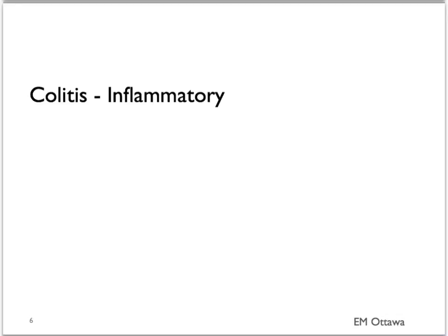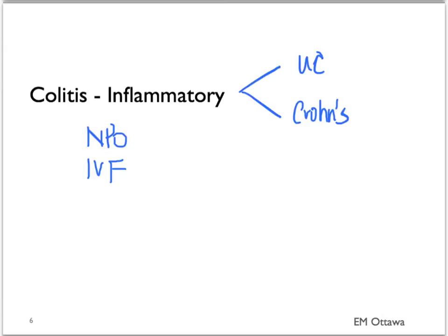For inflammatory colitis, that usually includes ulcerative colitis and Crohn's disease. The treatment for inflammatory colitis includes bowel rest, so the patient is kept NPO. IV fluids are given to ensure the patient is hydrated, and anti-inflammatory medication such as steroids is given to decrease the inflammation in the bowel. There are other specific treatments for inflammatory colitis that we will not be discussing here.